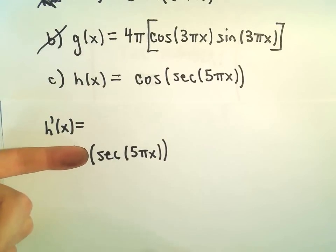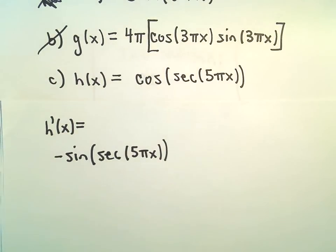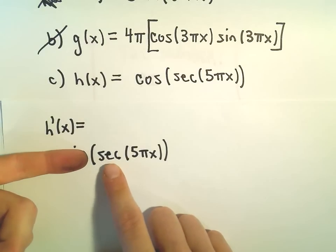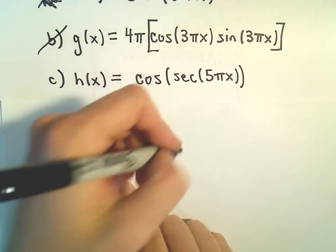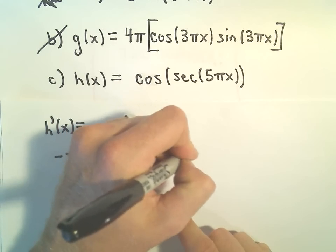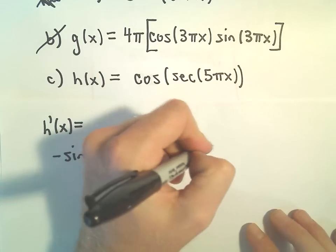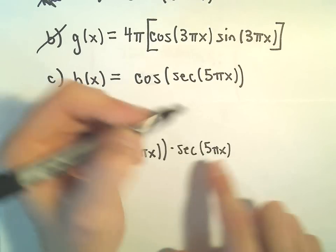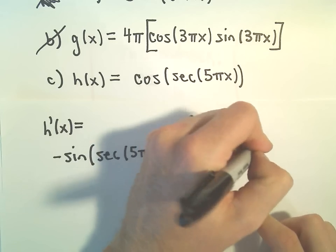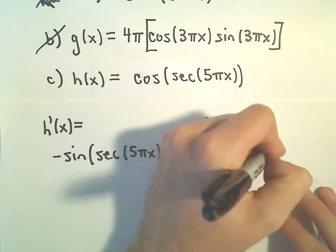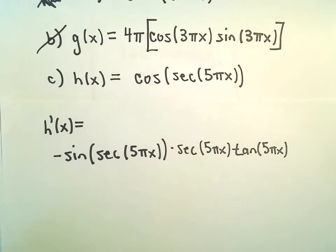Now we have to take the derivative of secant 5 pi x. The derivative of secant x is secant x tangent x. So here we'll get secant of 5 pi x times tangent of 5 pi x.